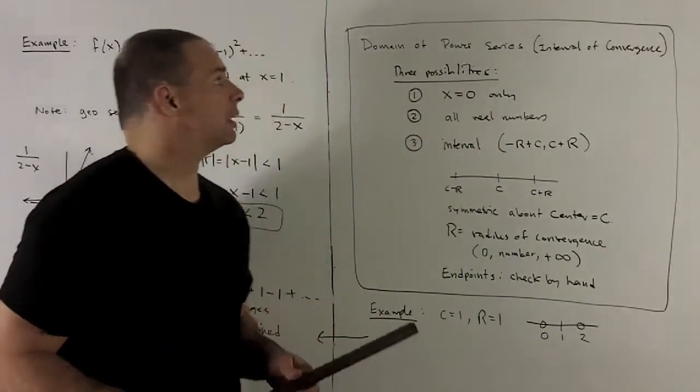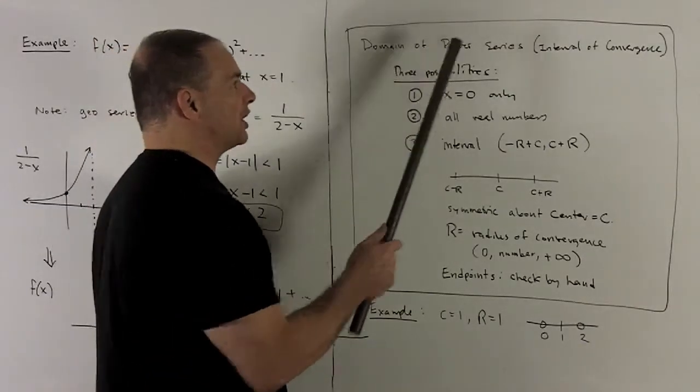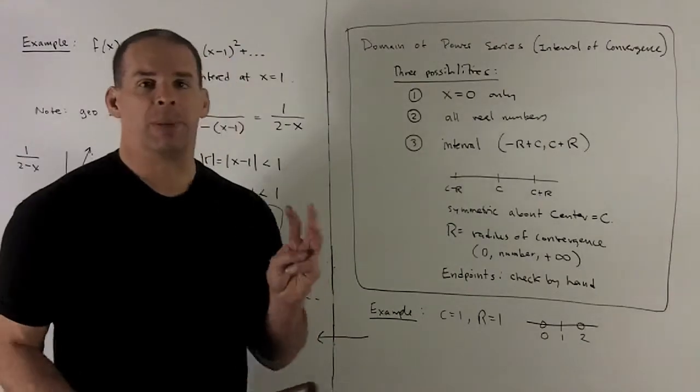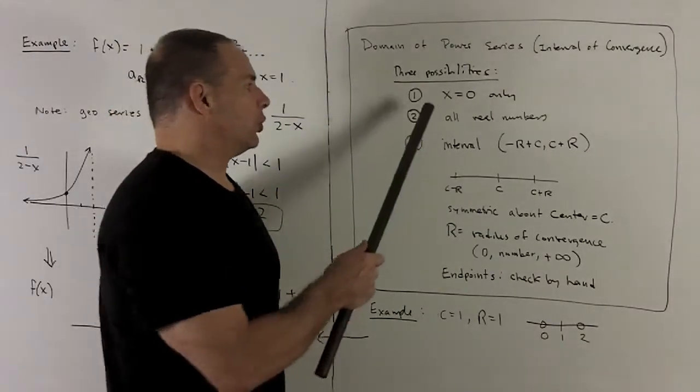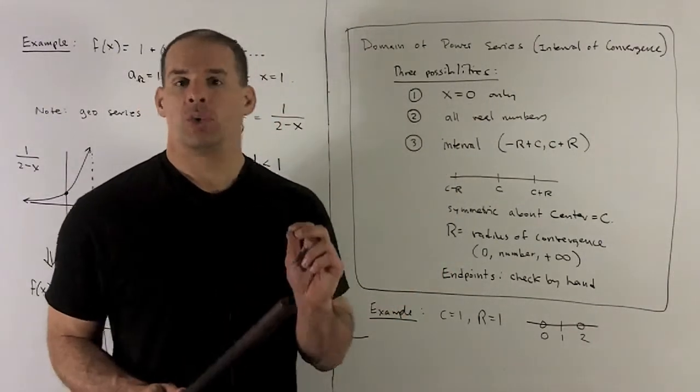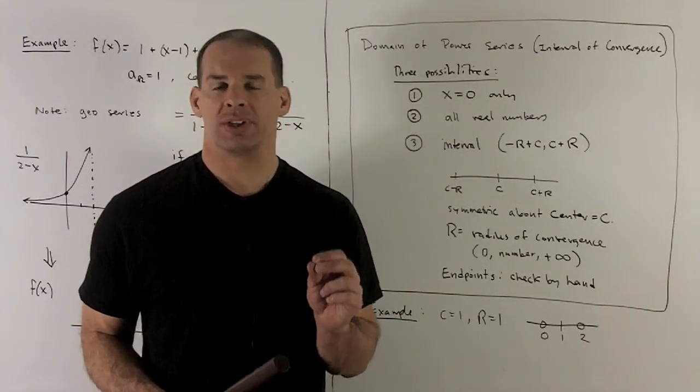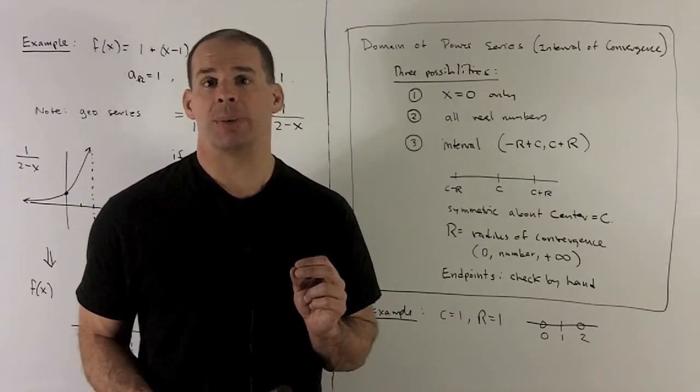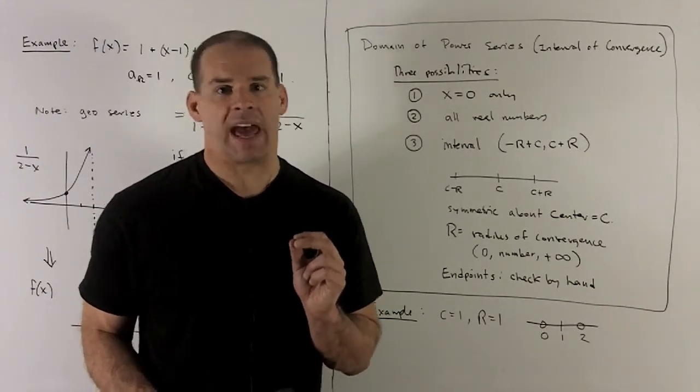This is going to be a definition. The domain of a power series, which is what we're going to call the interval of convergence. Three possibilities. You get x only, x equal to zero only. So that's if you're always going to get at least zero because if I put zero into my series, the only thing that will be left is the a_0 term. So, you're guaranteed to at least have that in there.